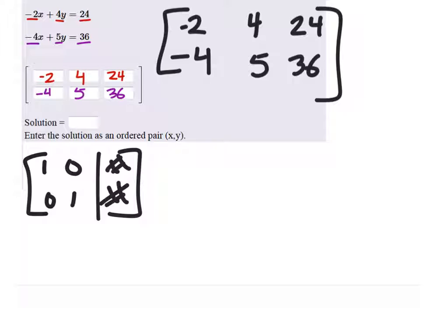But looking at this right now, I can see that in the second row, 4 is a multiple of 2 for the x column right there. So if I just multiply my first row by negative 2, then it will be the same as 4, but opposite to that negative 4.